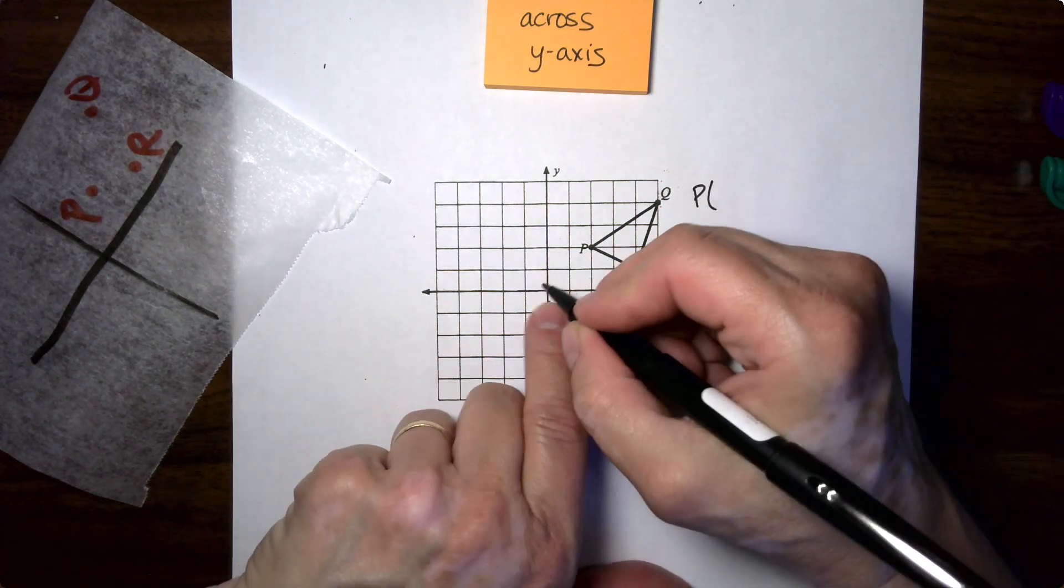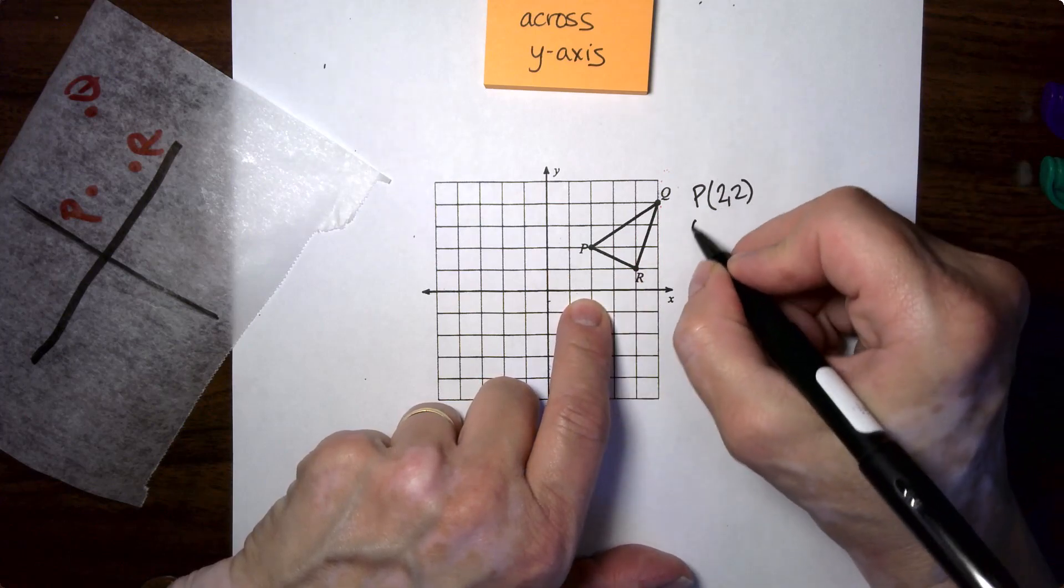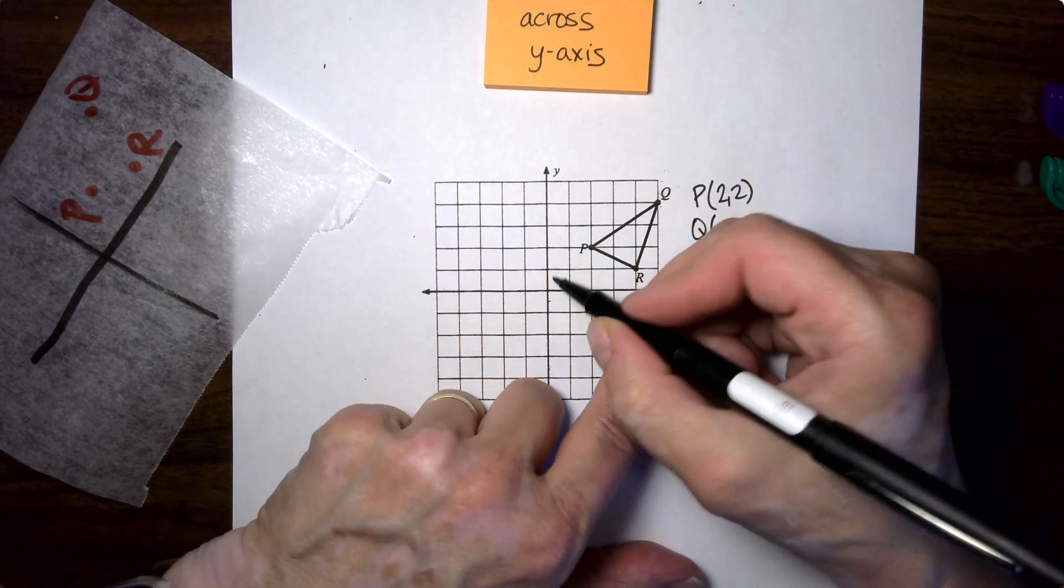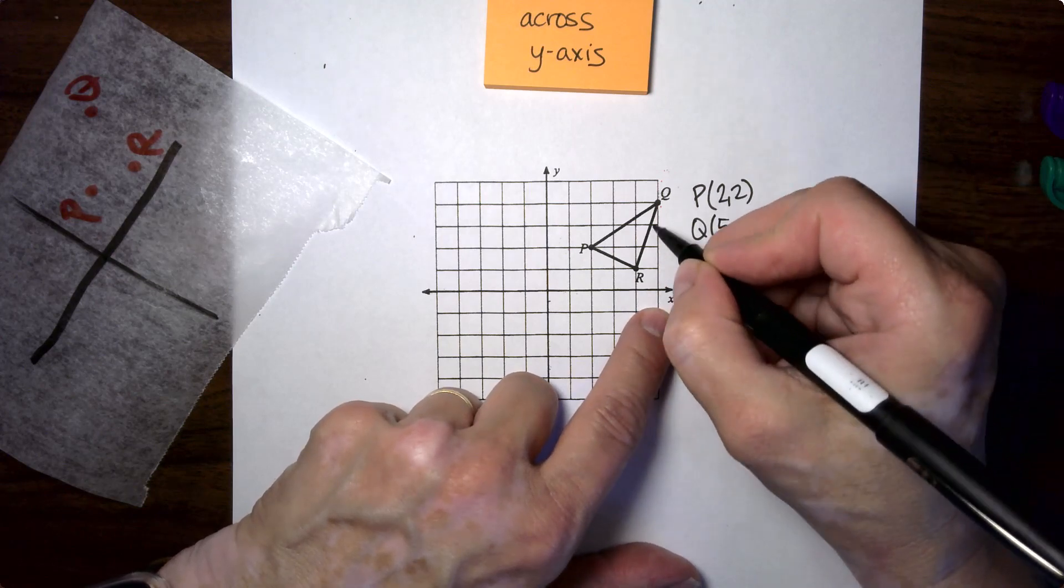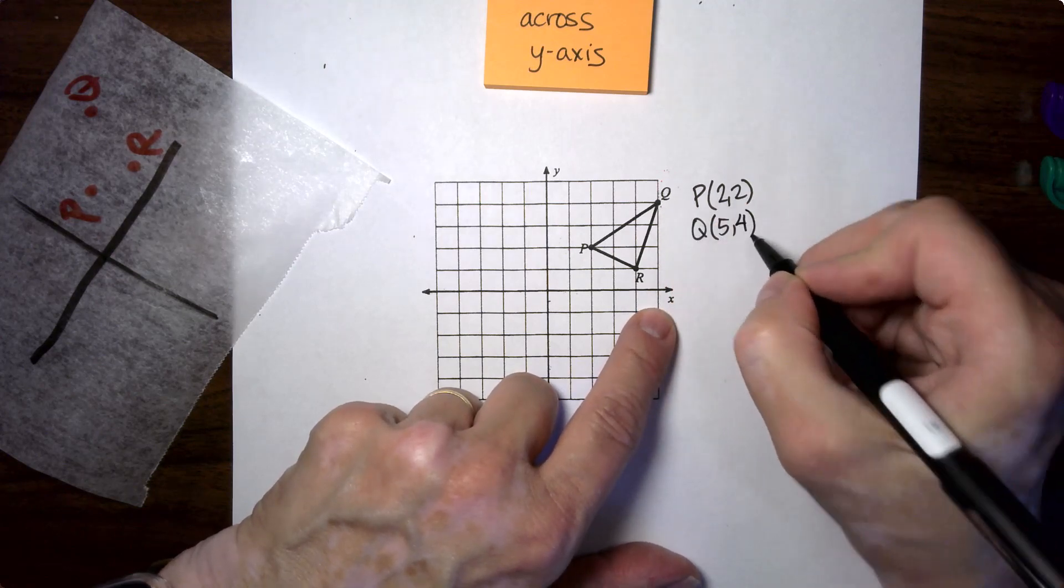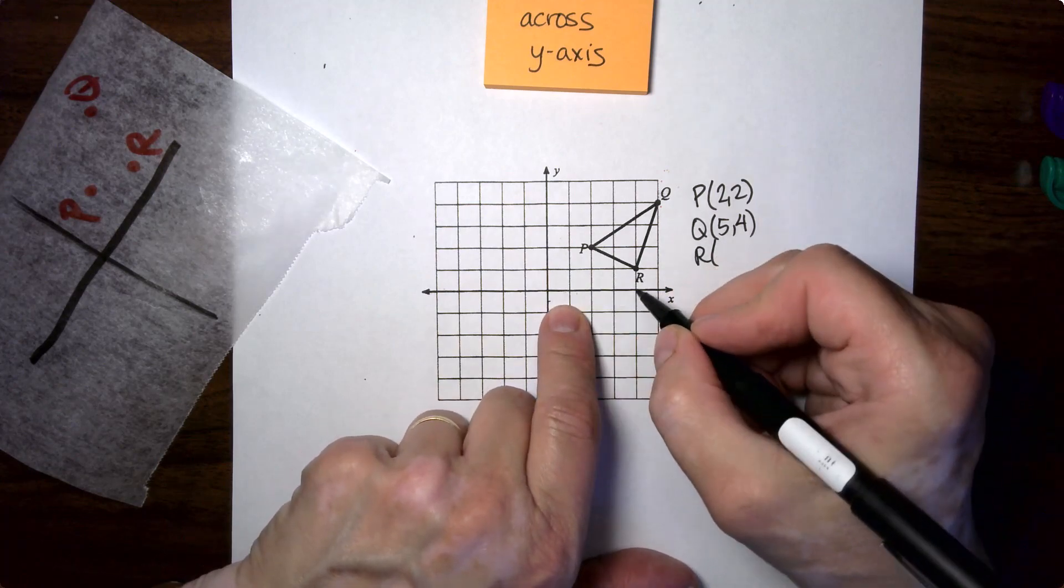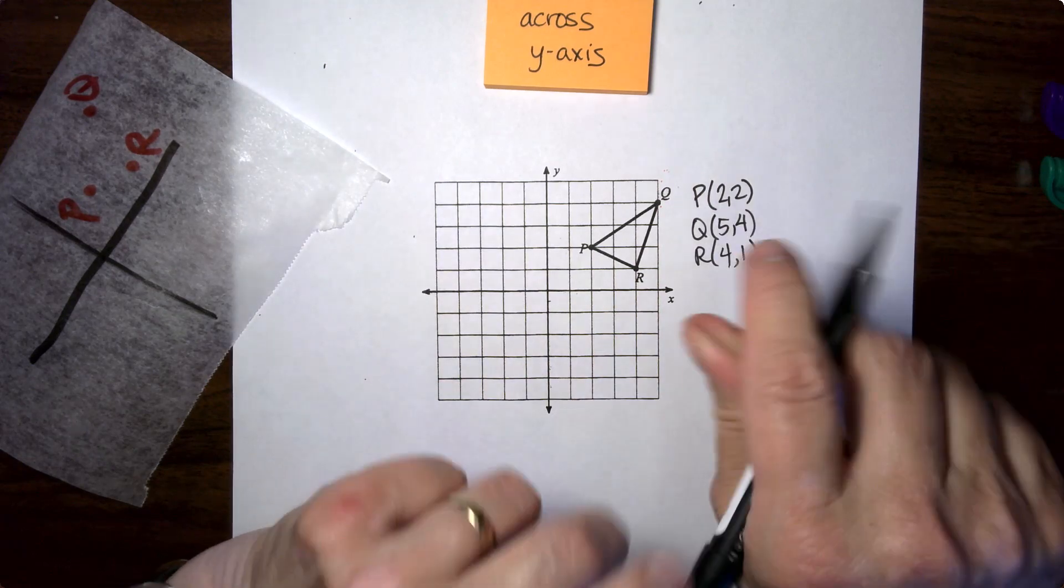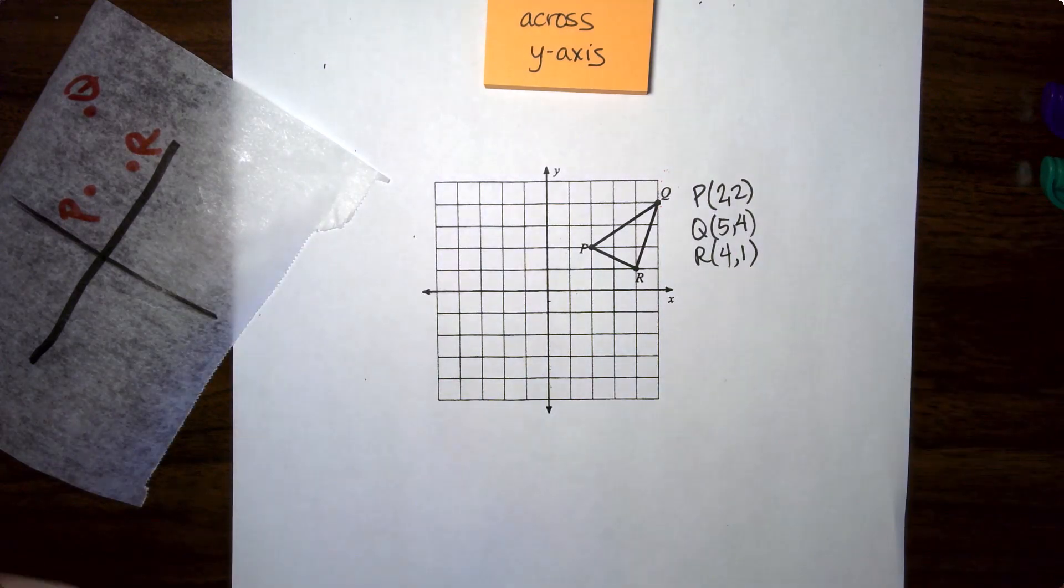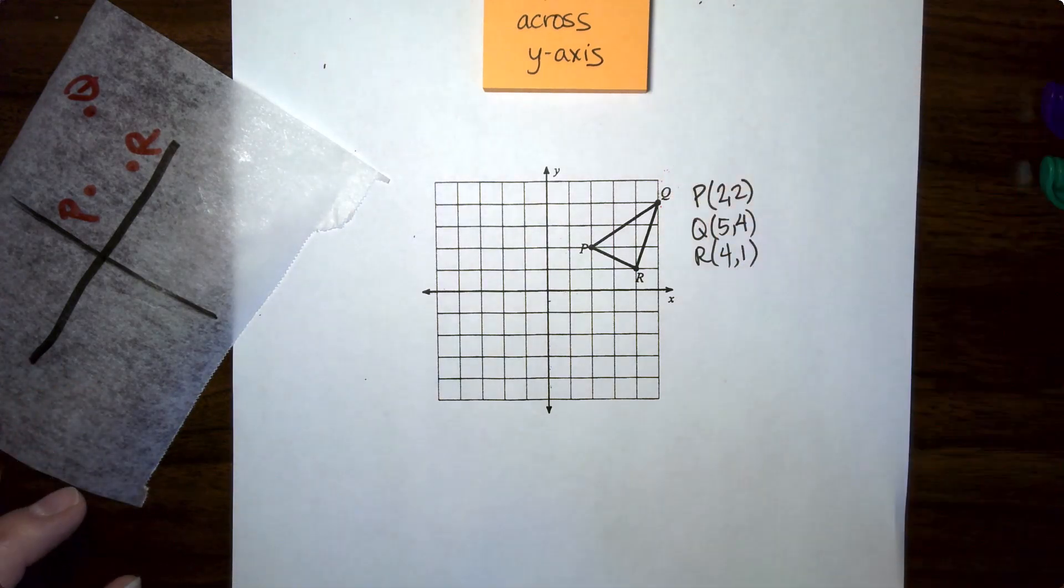So let's write down the points where we've got right now. P is 2, 2. Q is 5, 4. And R, 4, 1. So those are the original points. When we write the new points, we'll just be adding apostrophes on and calling them P prime, Q prime, and R prime.